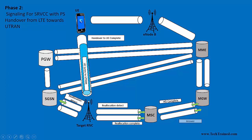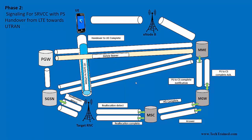The target RNC sends a Relocation Complete response towards the MSC, which forwards it to the MSC server indicating handover has been completed. This response is forwarded towards MME. Once MME receives the complete notification, it sends an acknowledgement and deletes the bearer for the voice session. Now we have both packet switch and circuit switch — voice and data bearers — so the voice bearer will be deleted.